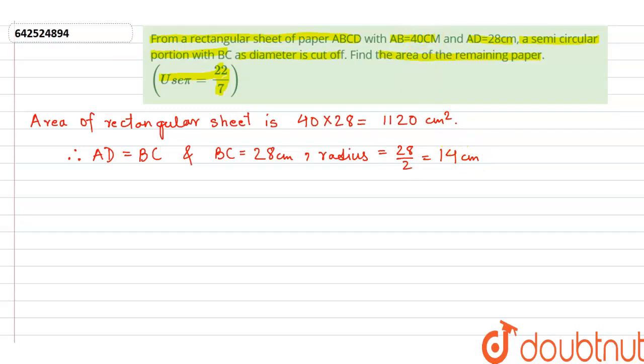Now let's find the area of the semicircular region. So the area of the semicircular region is πr² that is 14 into 14 into half because it is a semicircle.